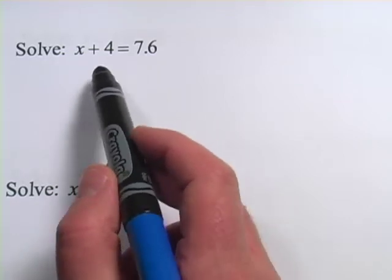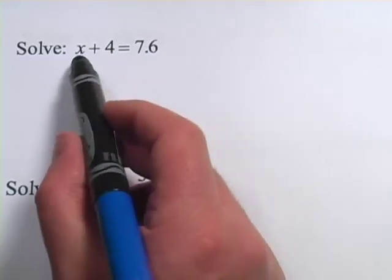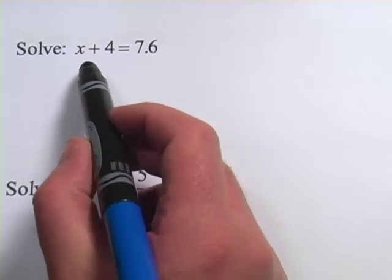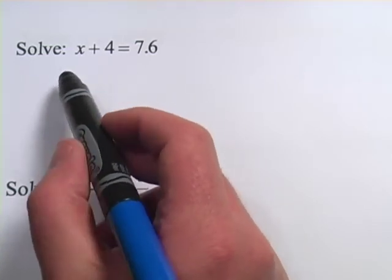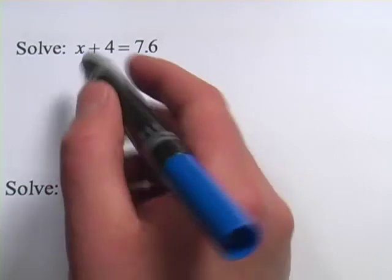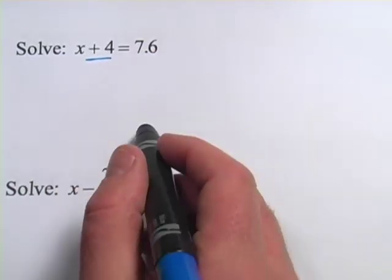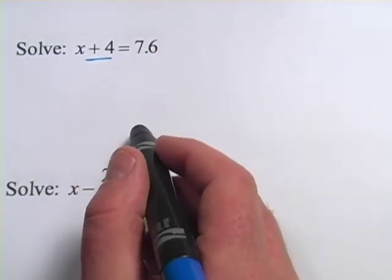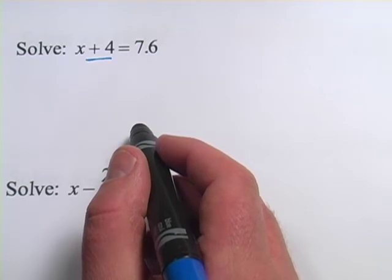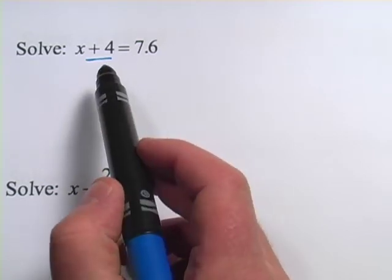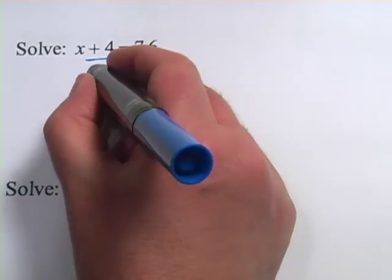The trick that you want to do when you solve for x is to get x all alone on one side of the equal sign. So we're going to want it over here on the left. What that leaves is this plus 4. So how do we get rid of that? Well, you get rid of things by doing the opposite. So if this is plus 4, the opposite would be minus 4.